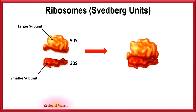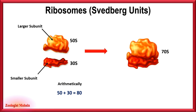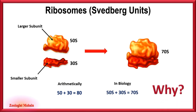...while protein synthesis is active, they have 70S units. Now, most students get confused here: if we add both numbers arithmetically, it is 80 — so why does the whole assembly have 70S? Well, that's a valid question if solved mathematically, but in biology...